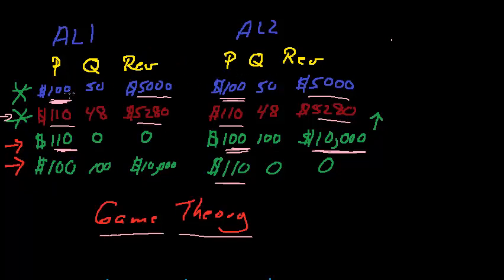we said that both airlines started out with a $100 fare and they were each making $5,000 in revenue. When airline one increased the fare to $110, airline two, if airline two went along with that, they would both be better off making $5,280 and that would have been the optimal point.